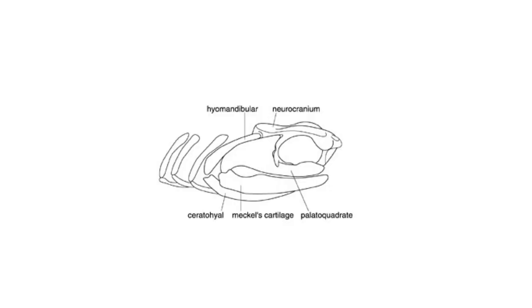In primitive jawed fish, such as sharks, the upper jaw is composed of cartilage called the palatoquadrate, while the lower jaw is composed of a structure called Meckel's cartilage.